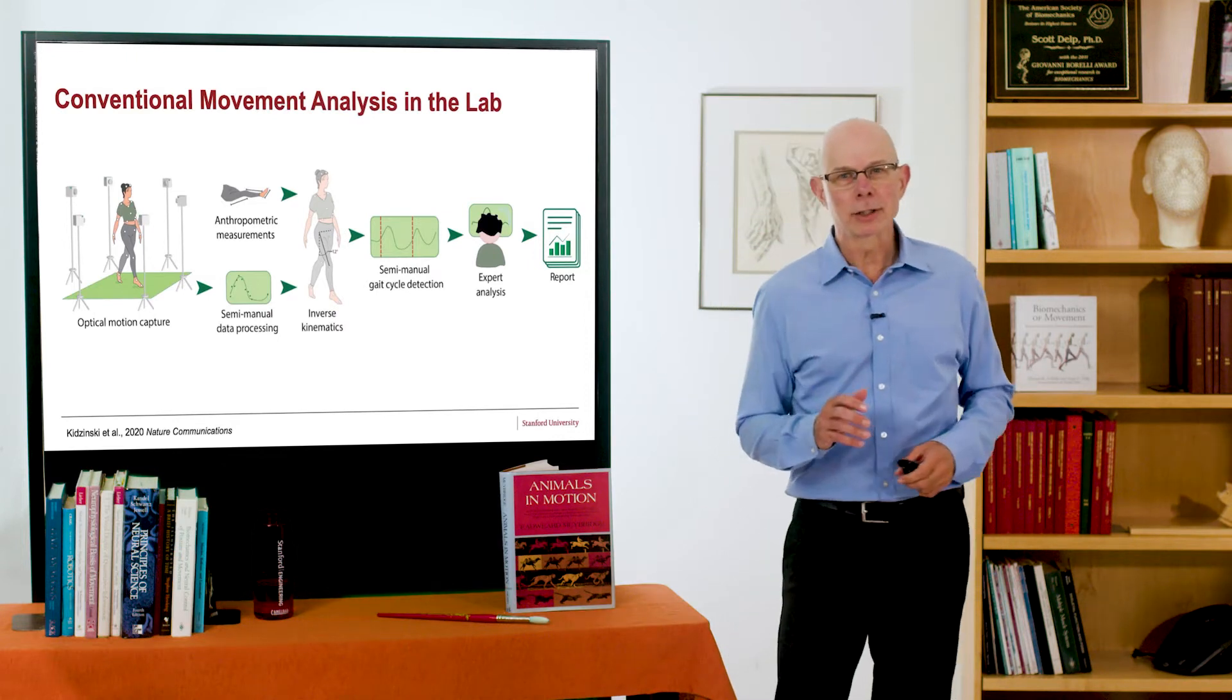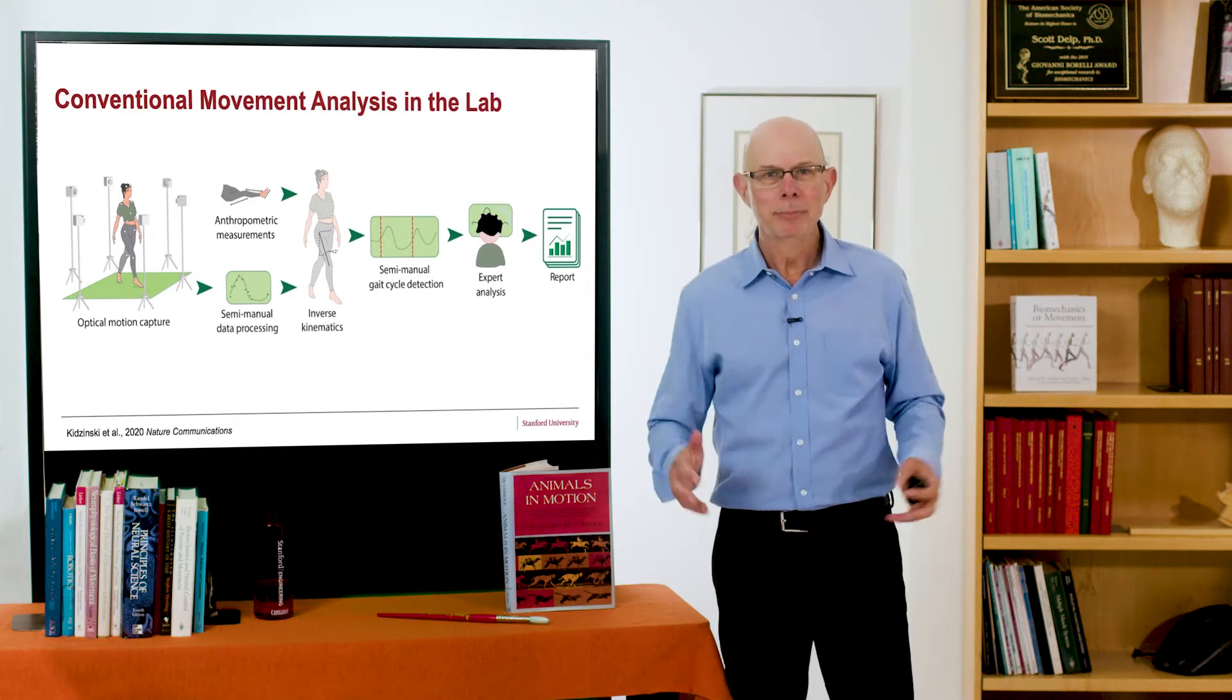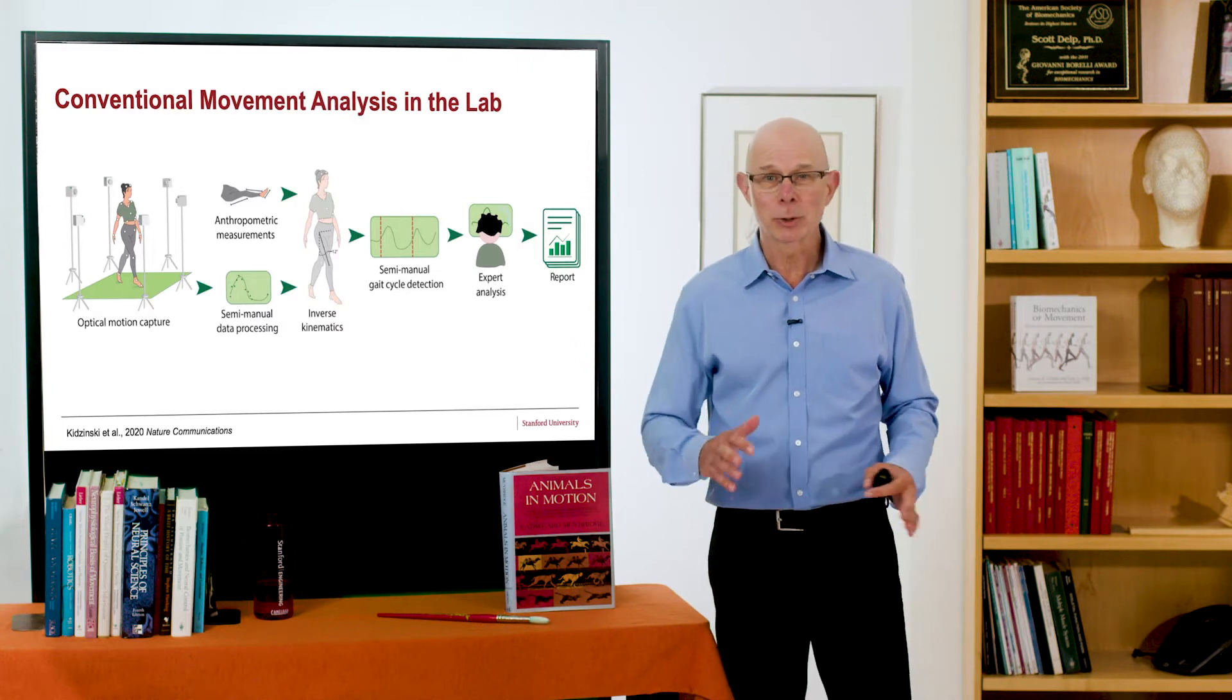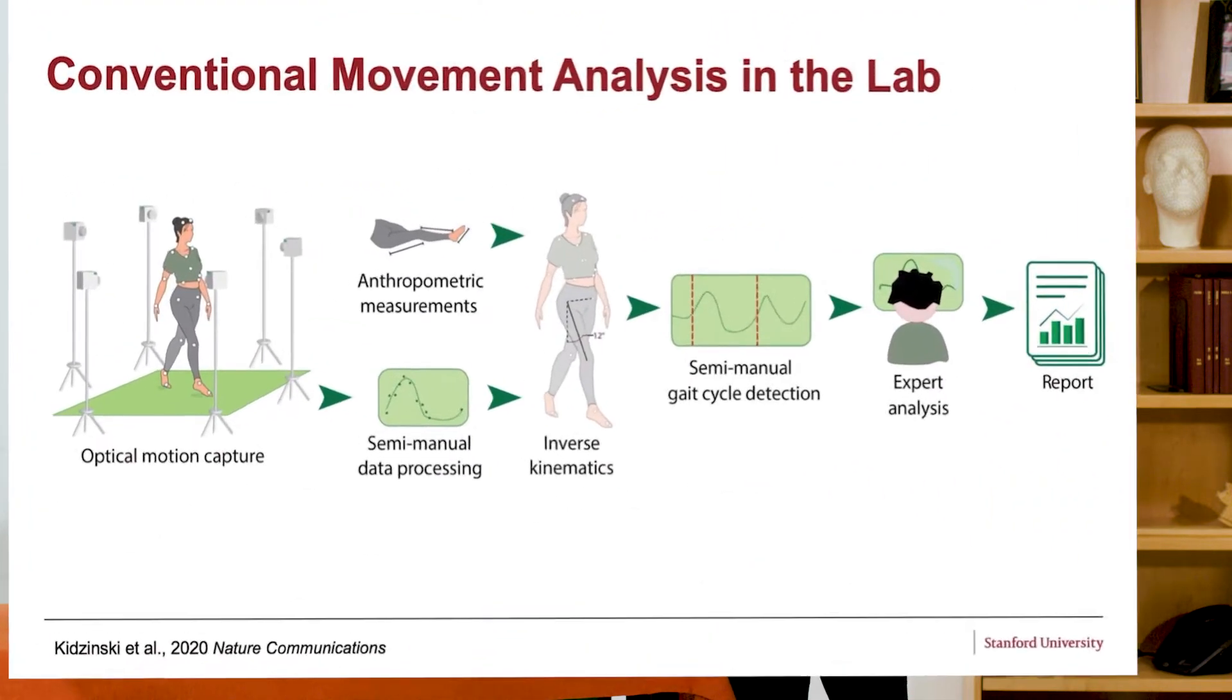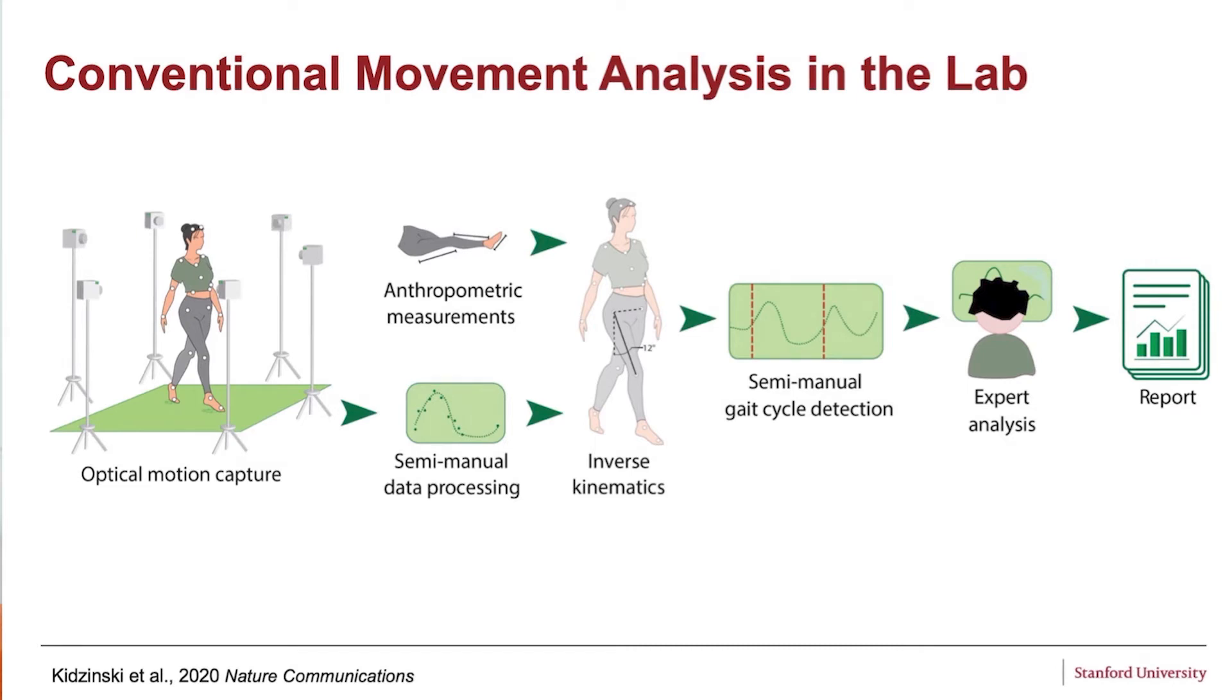Now traditional gait analysis takes place in a lab and requires a significant amount of time and expensive equipment. With optical motion capture, you need specialized cameras, trained individuals to place markers on the subject. The subject has to come to the lab where they move in a way that might not be how they move at home or in their community. Once the data is collected, a significant amount of time is required to manually segment it, input anthropometric measurements. It's quite a process.